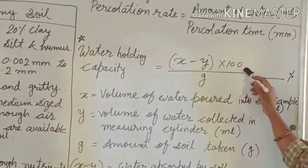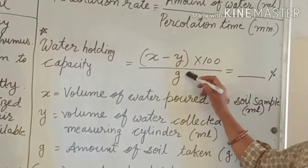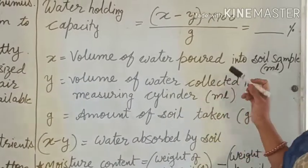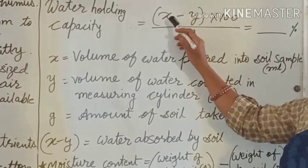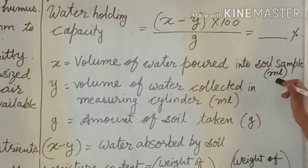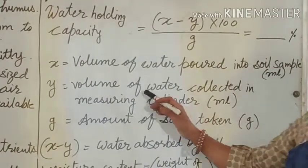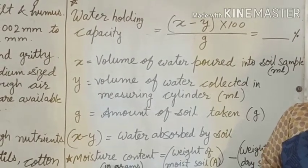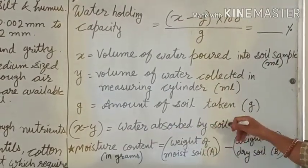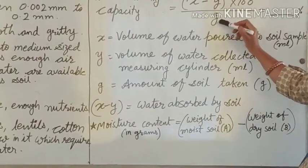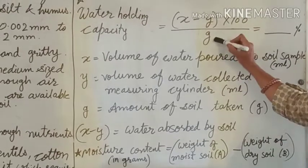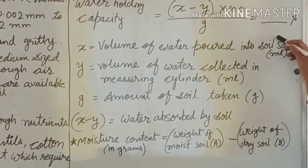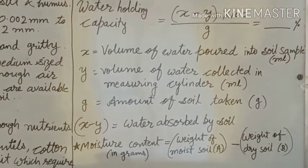Now, water holding capacity. Here we use another formula: (X minus Y) multiplied by 100, divided by G. Here X is the volume of water poured into the soil sample in milliliters, Y is the quantity of water collected in the measuring cylinder after percolation, so X minus Y is the water absorbed by the soil. This is divided by the amount of soil taken in grams, then multiplied by 100 to calculate the water holding capacity as a percentage.